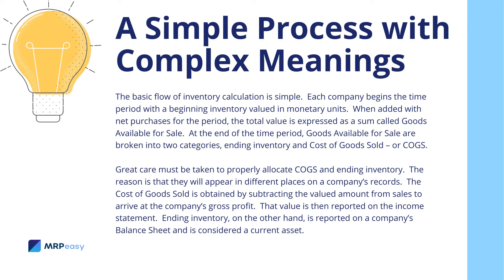Great care must be taken to properly allocate cost of goods sold and ending inventory, because they will appear in different places on a company's records. The cost of goods sold is obtained by subtracting the valued amount from sales to arrive at the company's gross profit, and that value is then reported on the income statement. Ending inventory, on the other hand, is reported on a company's balance sheet and is considered a current asset.